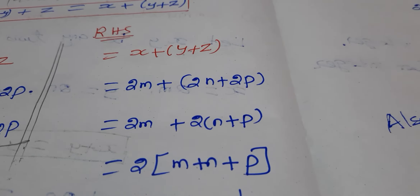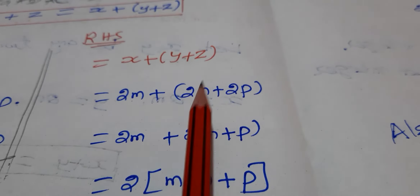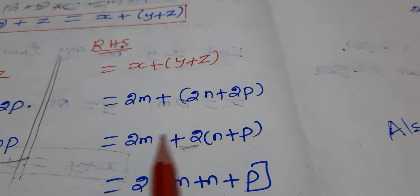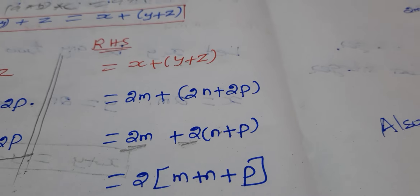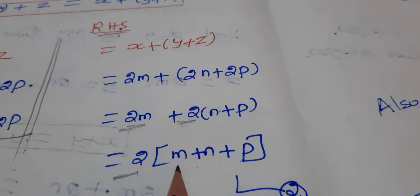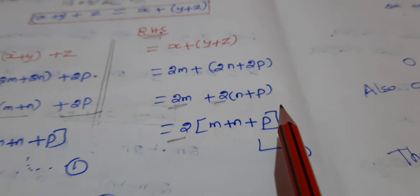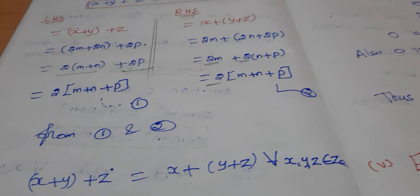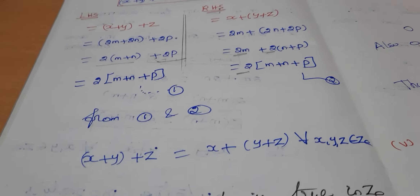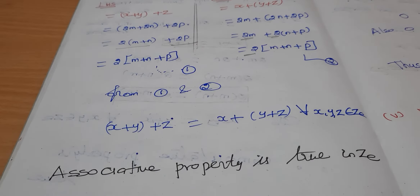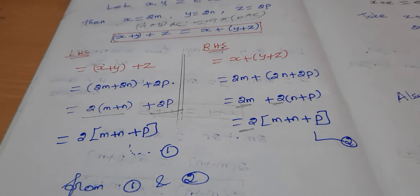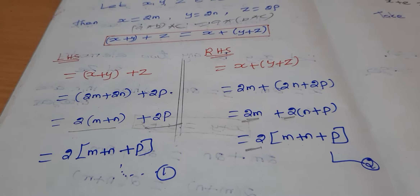The right hand side also gives 2(m + n + p). Left hand side equals right hand side. That means associative property is true.